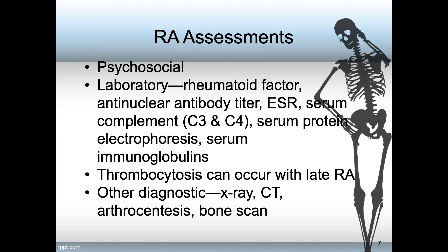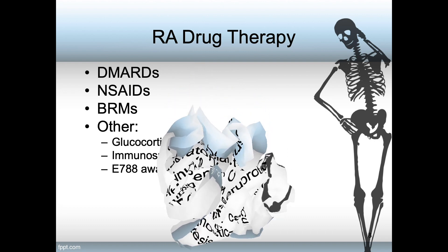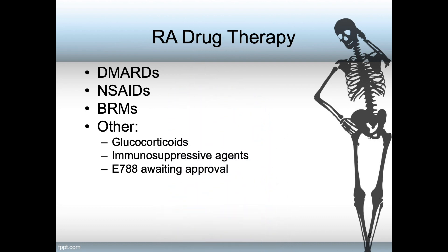Other diagnostic tools can include x-rays, CTs, arthrocentesis, and bone scans. Drug therapy for RA includes disease-modifying anti-rheumatic drugs, or DMARDs. These are actually the mainstay for RA drug therapy, and it is a slow-acting drug that can take up to four to six weeks to control joint inflammation.